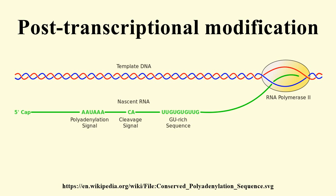3' processing — cleavage and polyadenylation: The pre-mRNA processing at the 3' end of the RNA molecule involves cleavage of its 3' end and then the addition of about 250 adenine residues to form a poly-A tail. The cleavage and adenylation reactions occur if a polyadenylation signal sequence is located near the 3' end of the pre-mRNA molecule, which is followed by another sequence that marks the site of cleavage. A GU-rich sequence is also usually present further downstream on the pre-mRNA molecule.